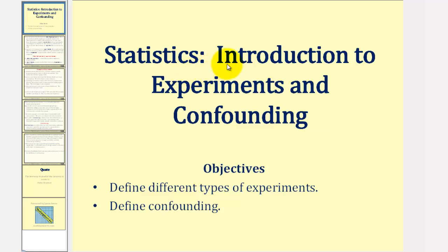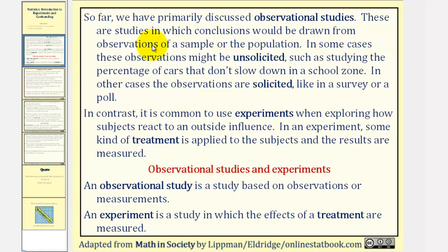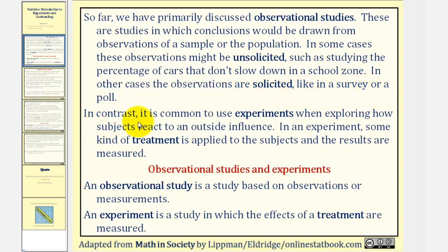Welcome to an introductory lesson on experiments and confounding. So far we have primarily discussed observational studies. These are studies in which conclusions would be drawn from observations of a sample or the population. In some cases, these observations might be unsolicited, such as studying the percentage of cars that don't slow down in a school zone. In other cases, the observations are solicited, like in a survey or poll.